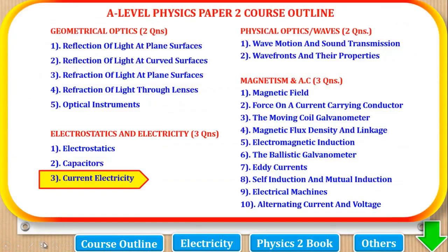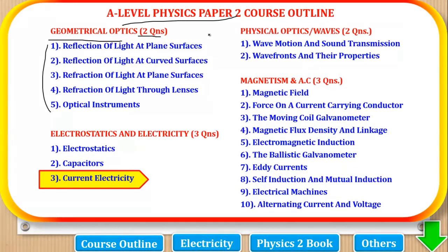Before we start, let's first look at the course outline of this paper. Physics paper 2 is divided into four parts. The first part is geometrical optics, where two questions come from these topics and a student must answer one. Next is physical optics, or what we call waves, where two questions come from these topics and a student must answer one.